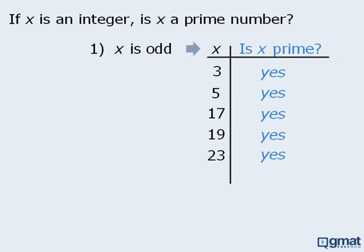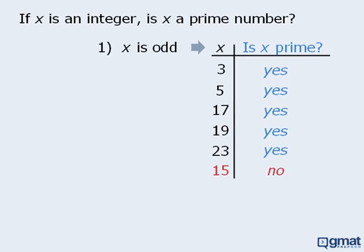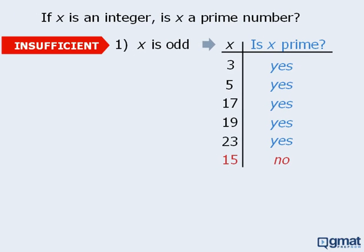In this example, the table results suggest that if x is odd, then x will always be prime. However, in this example, I have done a poor job selecting possible values for x. If I had chosen 15 as a possible value for x, then the answer to the target question would have been no — 15 is not prime — in which case we would be able to conclude with absolute certainty that statement 1 is not sufficient.